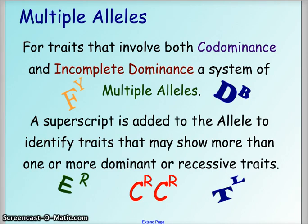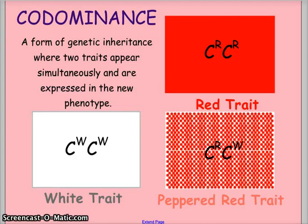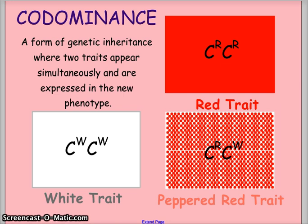For codominance, what we're looking at is a form of genetic inheritance where two traits appear at the same time simultaneously. Since both are appearing simultaneously, we get a phenotype that is unique and different from either of the two parents. So if we have a red trait and a white trait and both appear, we get this peppered, pinkish trait — the combination of two dominant traits shown simultaneously. This would be an example of codominance.